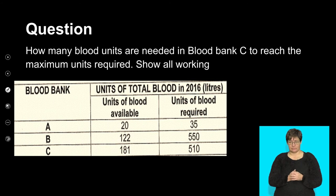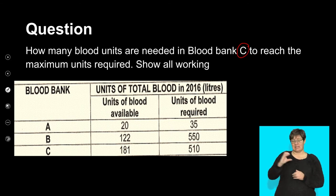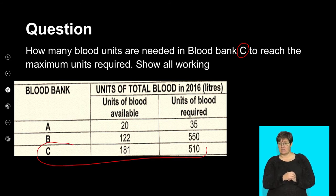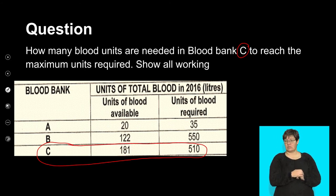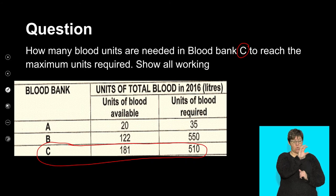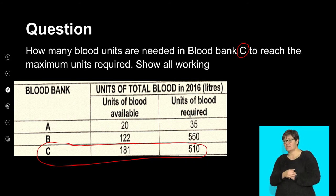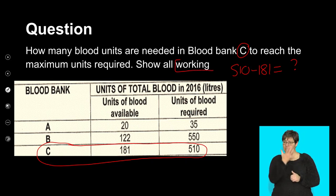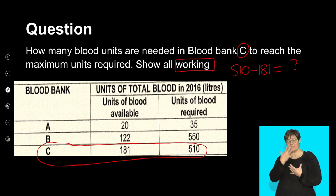The next question: how many blood units are needed in blood bank C to reach the maximum units required? I take out my calculator. How many are needed? 510. How many do I have? 181. So I calculate 510 minus 181 and that answer tells me exactly how much more is needed.